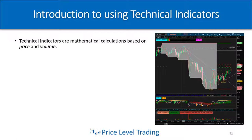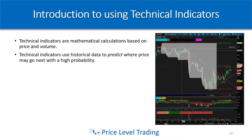I don't rely on indicators for my trade entries all the time — I mainly use price action. Technical indicators are mathematical calculations based on price and volume, also known as measuring momentum of price. The reason why technical indicators don't work that well is because they use historical data to predict where price may go next with a high probability, and we're thinking in terms of probability here as a trader.